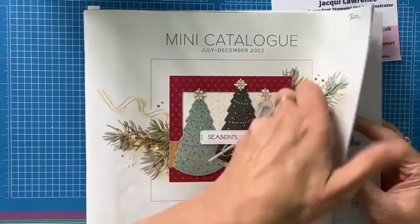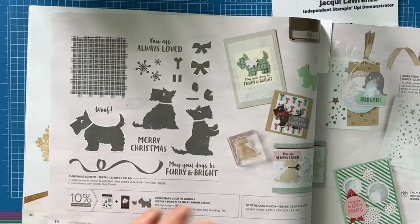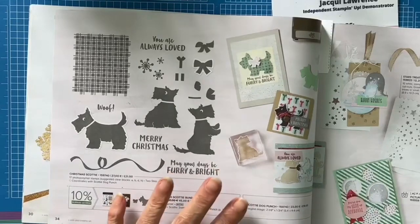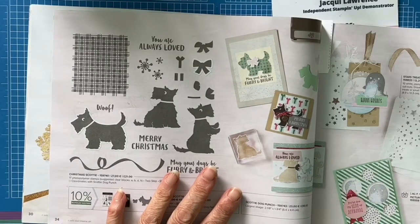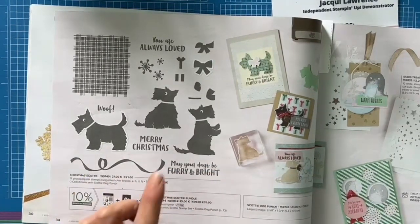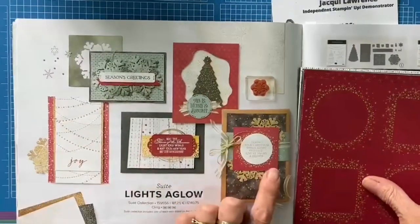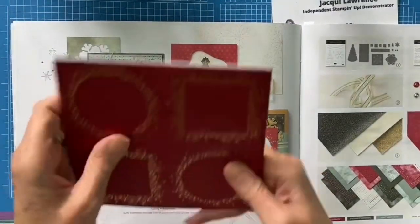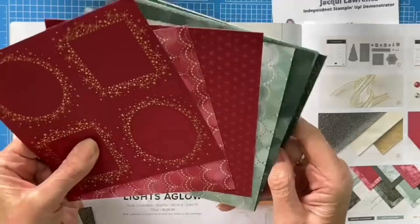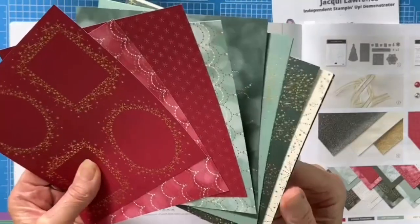So here is my catalogue and if we go to page 34 you will find the Christmas Scotty. I absolutely love this set, top of my list. I love terrier dogs and we used to have a West Highland Terrier, and also I love the Radley London bags and for those that know the bag there is a little Scotty Dog as their logo. With that I am also going to be using the Lights Aglow 6x6 papers and these are absolutely stunning. You will find these on page 31 and you get 48 sheets and there are 12 different designs.